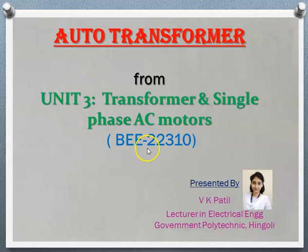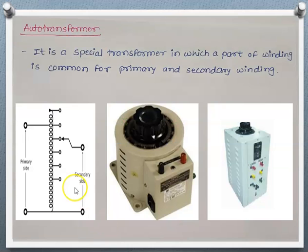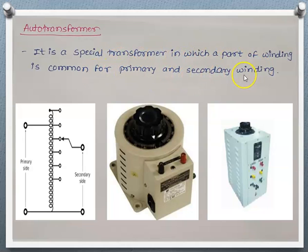Hello everyone, welcome back to Basic Electrical and Electronics Interview. In this session we are going to discuss what is an autotransformer, how it works, and how it can be used as a step-up or step-down transformer. The autotransformer is a special transformer in which a part of the winding is common for both primary and secondary winding.